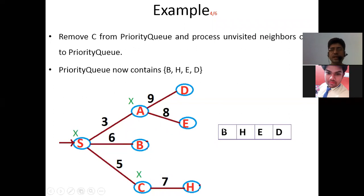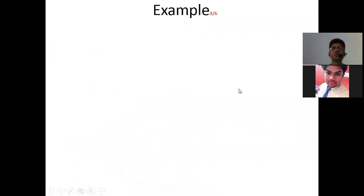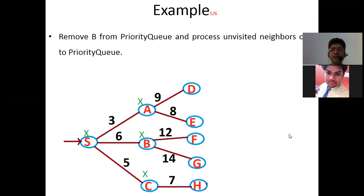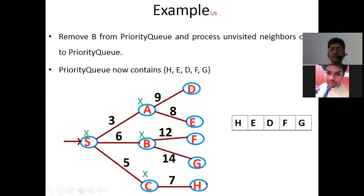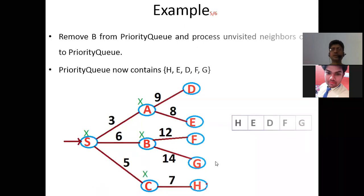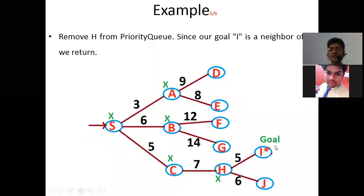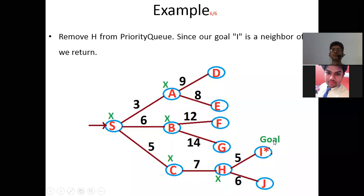The next node at the front of the priority queue is H. We remove H, and since our goal node I is a neighbor of H, we have reached the goal and return. In this manner, best-first search works with the help of prior information, expanding the most promising node at each step using the priority queue.